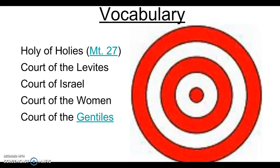That was the one day a year when the priest would come out in front of the people and actually speak God's name. The Holy of Holies was separated from the rest of the temple by a giant curtain that went from ceiling to floor. When the high priest would go into the Holy of Holies, the tradition was that somebody would tie a rope around him so that if he died, they could pull him out without having to enter into God's presence themselves.